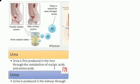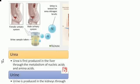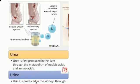For better understanding: urine is tested for urea nitrogen level. Urea is first produced in the liver through the metabolism of nucleic acids and amino acids. Urine, on the other hand, refers to what is produced in the kidney through urination. Thank you.